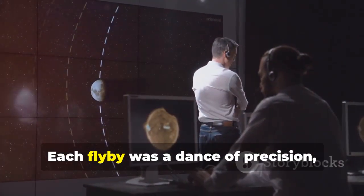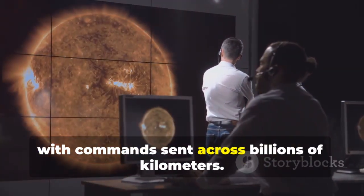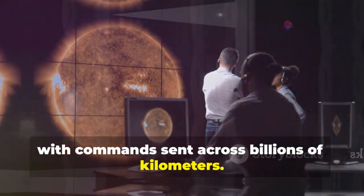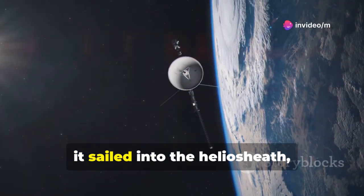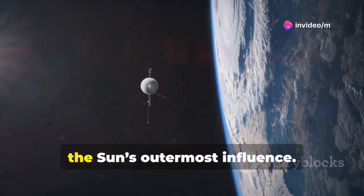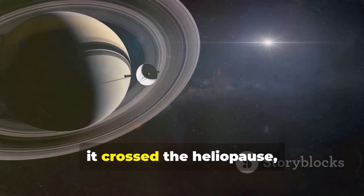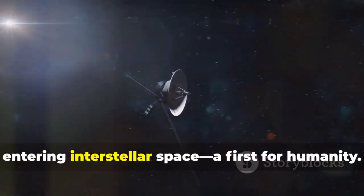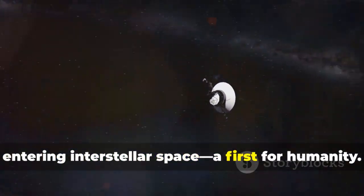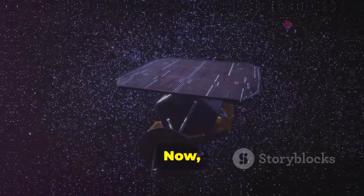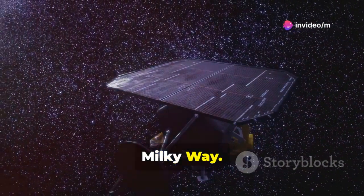Each flyby was a dance of precision, with commands sent across billions of kilometers. After Neptune, it sailed into the heliosheath, the Sun's outermost influence. In 2018, it crossed the heliopause, entering interstellar space, a first for humanity. Now, it samples the untouched material of the Milky Way.